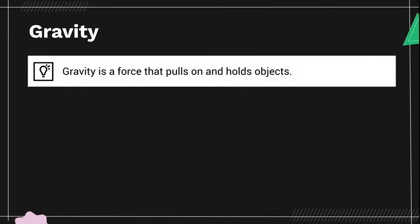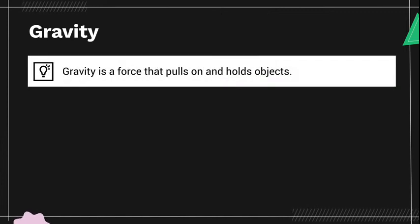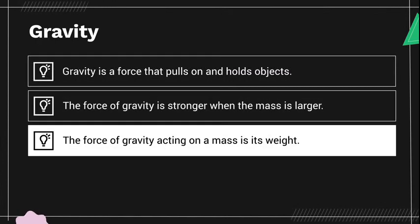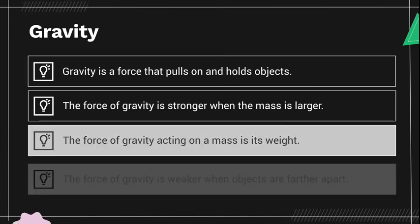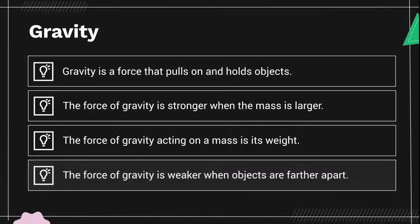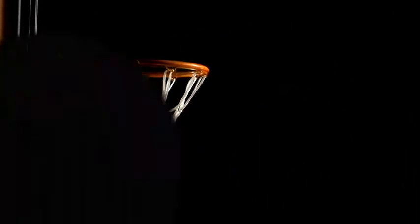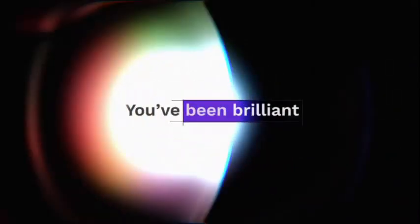Here are the important takeaways about gravity. Gravity is a force that pulls on and holds objects. The force of gravity is stronger when the mass is larger. The force of gravity acting on a mass is its weight. The force of gravity is weaker when objects are farther apart. This is a great start, but don't forget, there's always more to illuminate. What questions do you still have about gravity? This has been Spotlight on Gravity, and you've been brilliant.